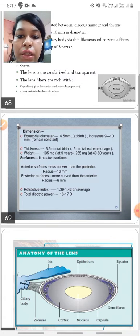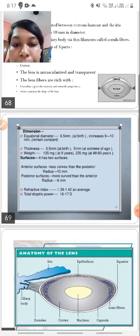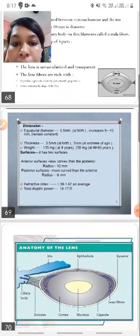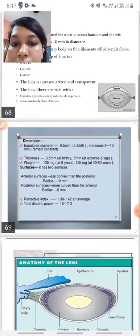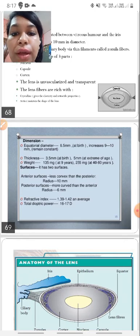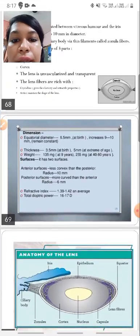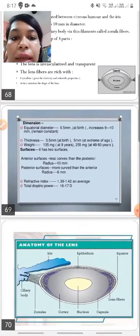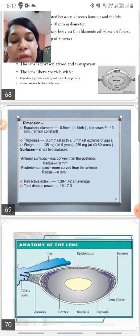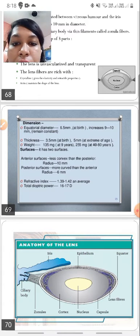So the eye as a whole has got a power of 60 diopters, of which I have already said 40 diopters is contributed by the cornea, and the rest, approximately 20 diopters is contributed by the lens. The lens has got an equatorial diameter of 6.5 mm at birth, which increases to 9-10 mm in adulthood and remains constant that way. So the weight varies throughout the age. When a person develops cataract, the weight of the lens increases because of excessive lens hydration.